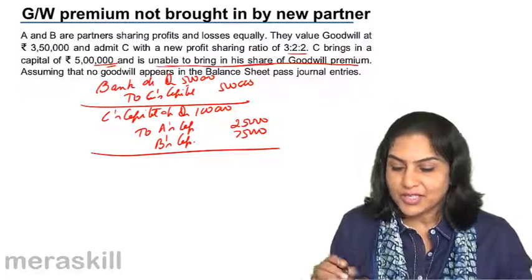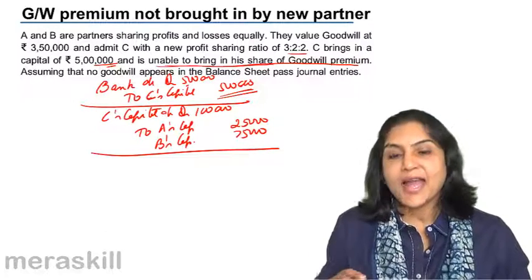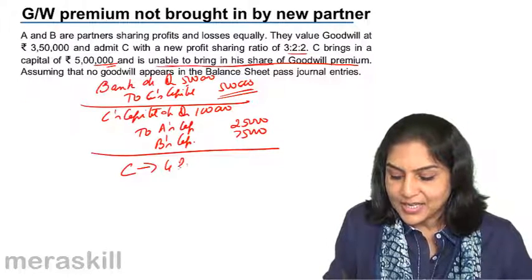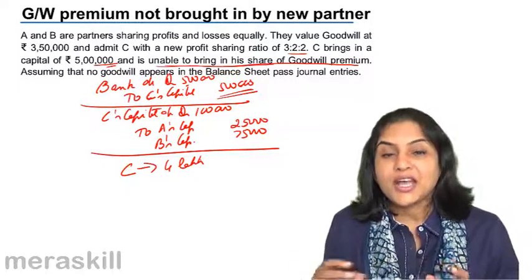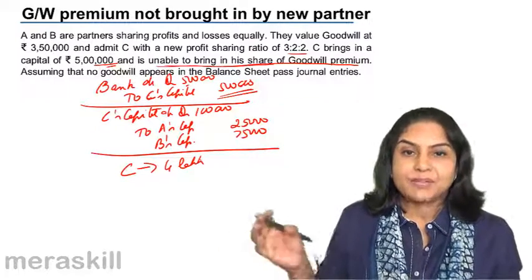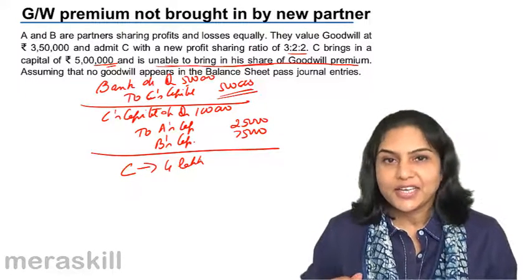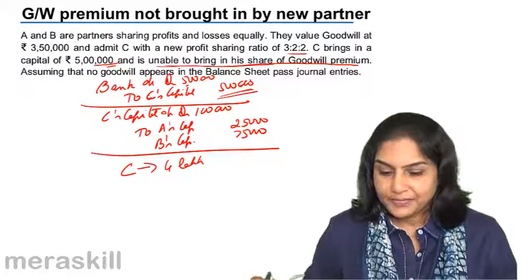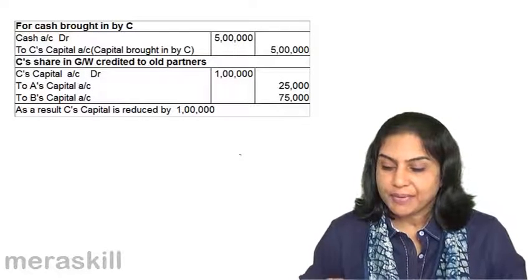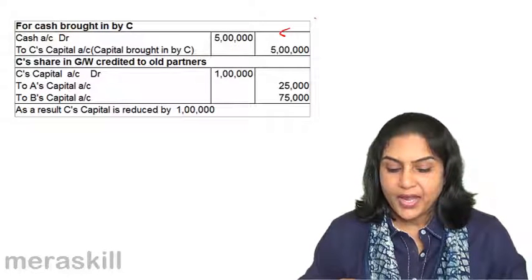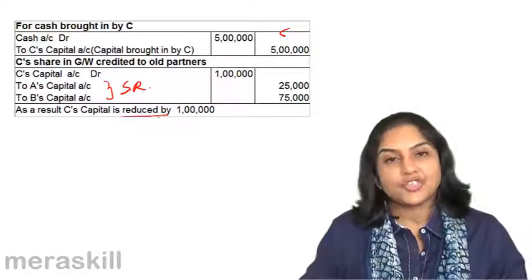As a result, though C has brought in capital of 5,00,000, his capital account has been debited by 1,00,000. He now has only 4,00,000 in his capital account, though he brought in cash of 5,00,000. This is because 1,00,000 has been adjusted and credited to A and B's capital accounts in their sacrificing ratio. C's capital is thus reduced by 1,00,000.